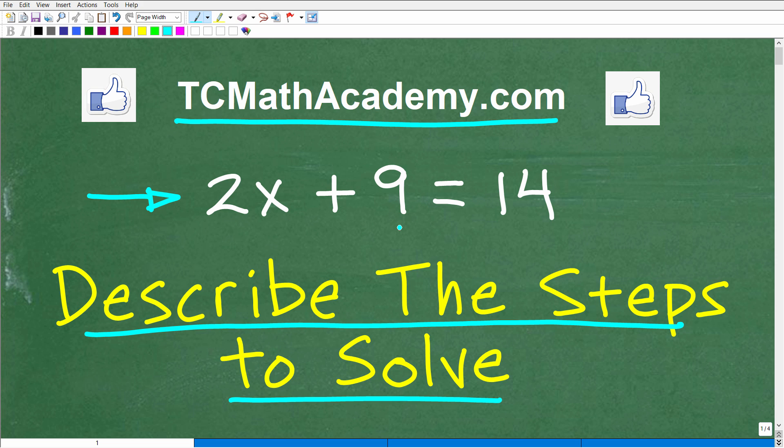So in your own words, go ahead and describe the specific steps to solve this equation 2x plus 9 is equal to 14. I'm going to show you the correct answer in just one second, and then obviously I'm going to go through the steps to solve this particular problem. Also, if you need math help with the course you're taking, test prep, or homeschooling, make sure to check out my math help program at tcmathacademy.com. You can find a link to that in the description below. And if this video helps you out, don't forget to like and subscribe, as that definitely helps me out.